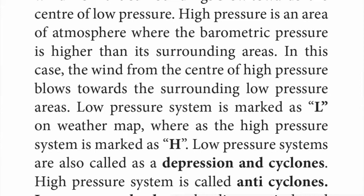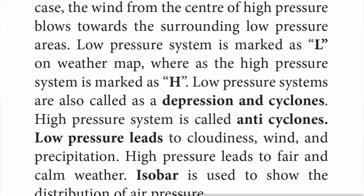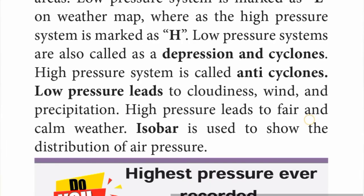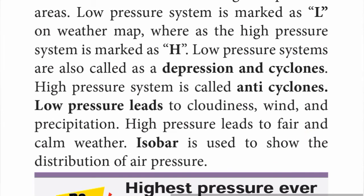Based on the level of pressure, it is categorized into low pressure and high pressure. Low pressure area is where the pressure is lower than its surrounding areas; winds blow towards the center. High pressure is where the barometric pressure is higher than surrounding areas; winds blow outward. Low pressure system is marked as L on weather maps, high pressure as H.